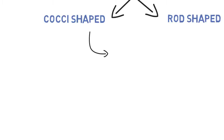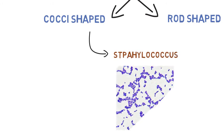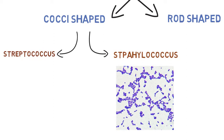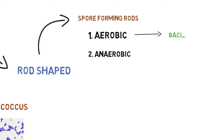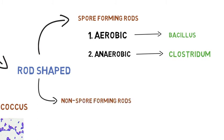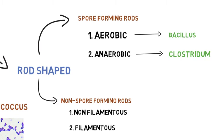Staphylococci are spherical Gram-positive cocci arranged in grape-like clusters, and Streptococci are arranged in chains or pairs. Spore-forming rods are further classified into aerobic and anaerobic groups. Bacillus is a Gram-positive aerobic bacteria, and Clostridium is a Gram-positive anaerobic organism. Non-spore-forming rods can be non-filamentous as well as filamentous. Corynebacterium and Listeria are non-filamentous Gram-positive rods, while Actinomyces and Nocardia come under the heading of filamentous bacteria.